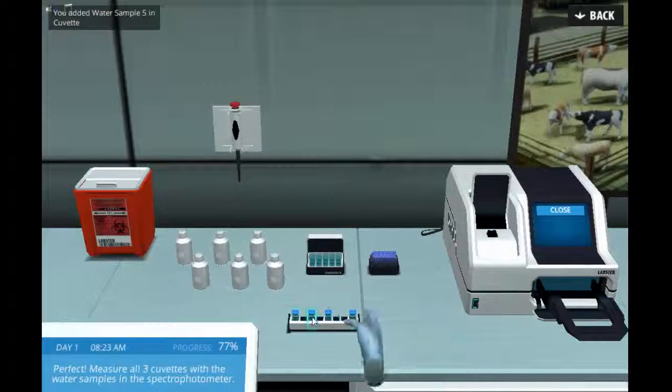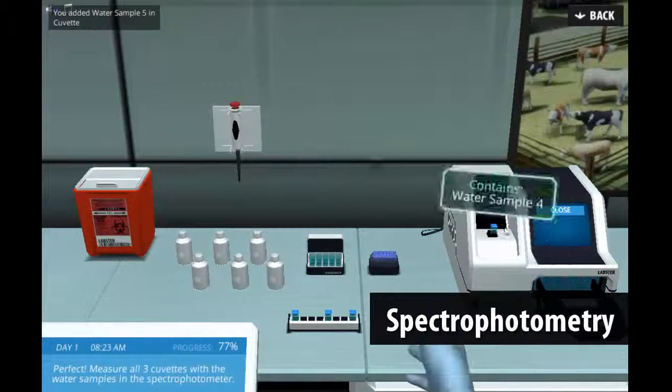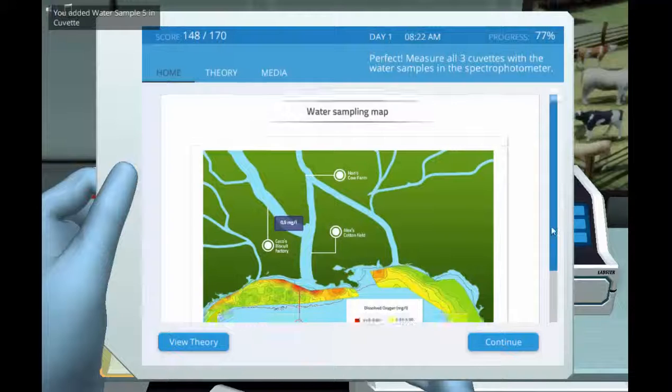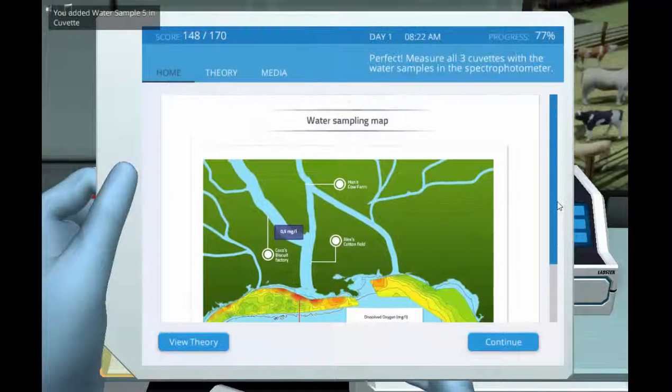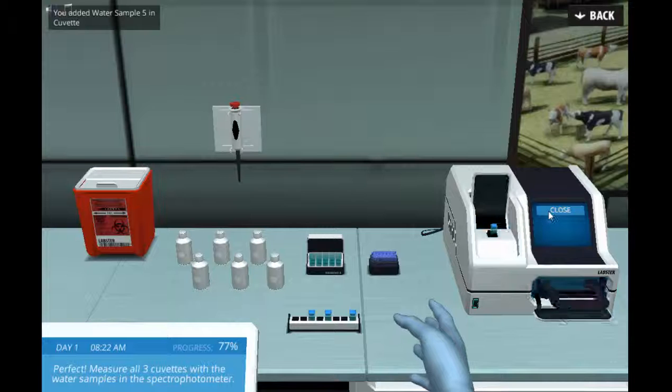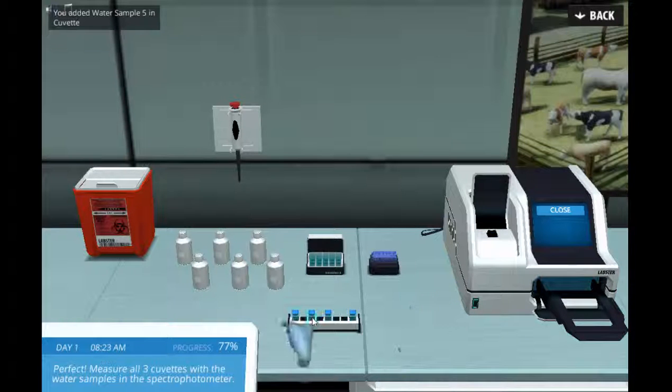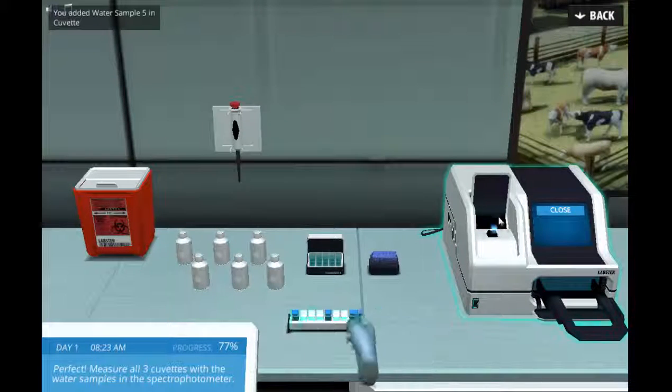They will analyze nitrogen content in the water sample using spectrophotometry. An interactive map will help them determine the source of excessive nitrogen runoff that caused the harmful algal bloom. Will you be able to prevent the massive fish kill?